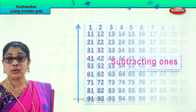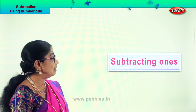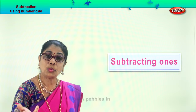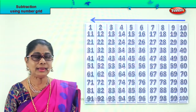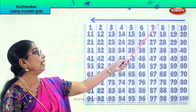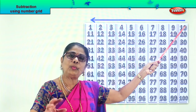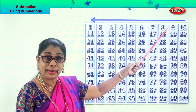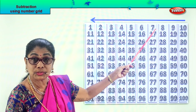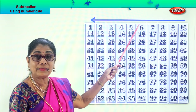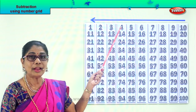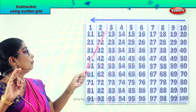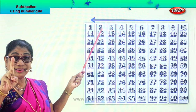Next, let's learn subtracting 1 from the number each time. Take away 1 — what will you get? One less. Let's look at the grid. Now look at the arrow. From 10 if you take away 1, what will you get? Yes — 9. 9 minus 1 — 8. 8 minus 1 — 7. 7 minus 1 — 6. 6 minus 1 — 5. 5 minus 1 — 4. 4 minus 1 — 3. 3 minus 1 — 2. 2 minus 1 — 1. Very good!